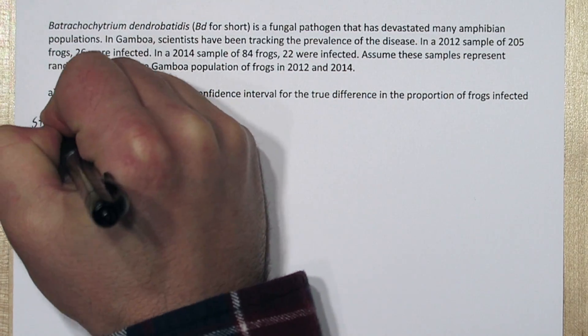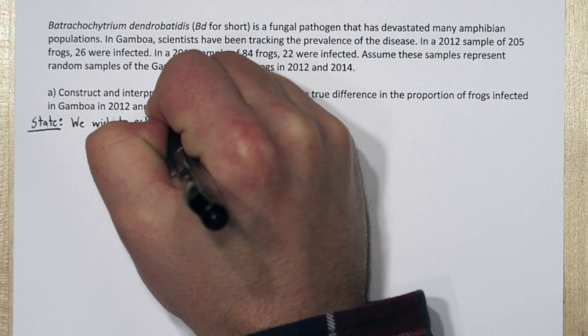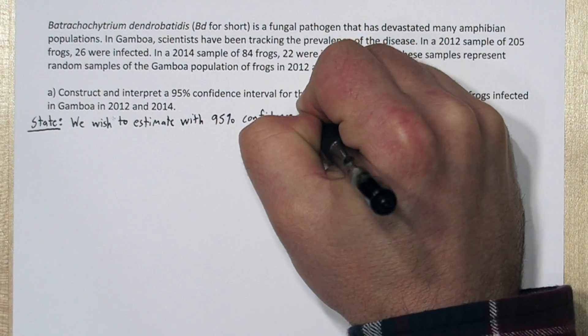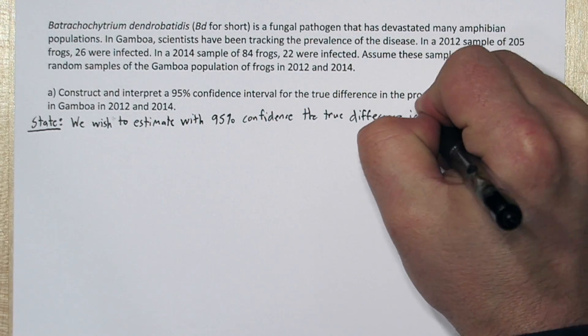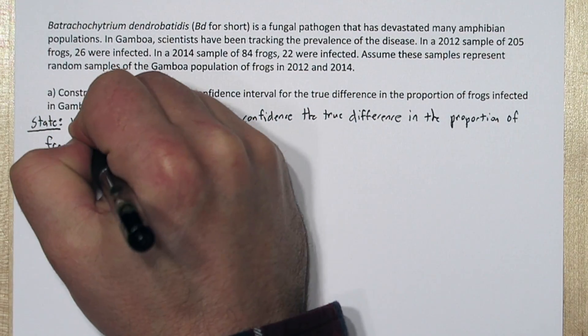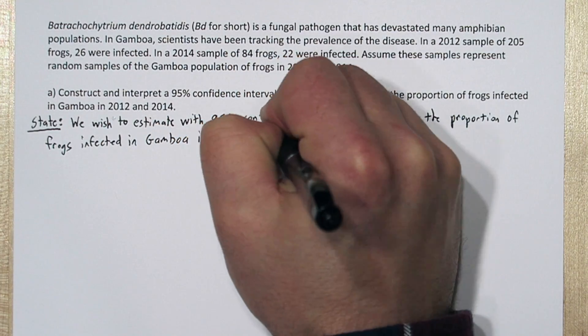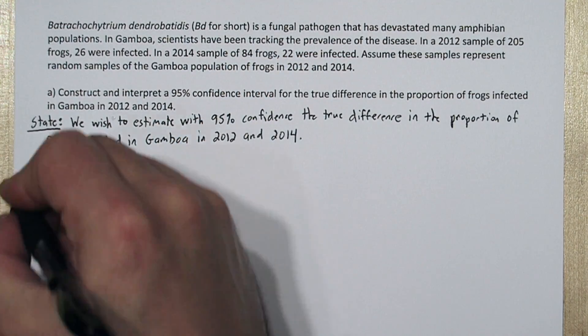For the state step, we're basically going to repeat the sentence in part A. We wish to estimate with 95% confidence the true difference in the proportion of frogs infected in Gamboa in 2012 and 2014.